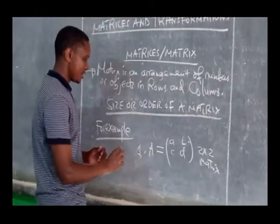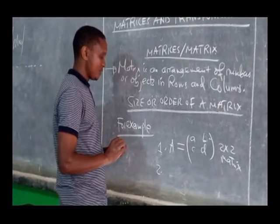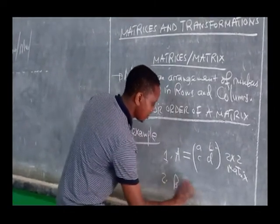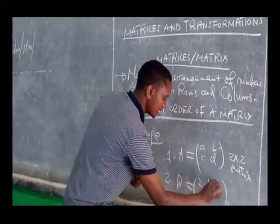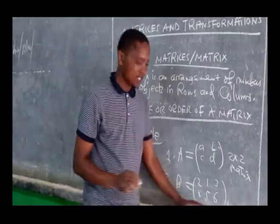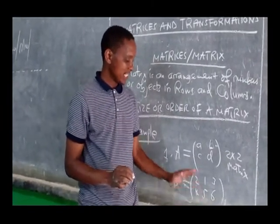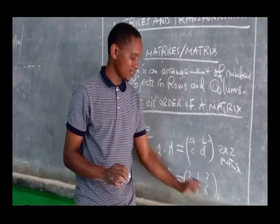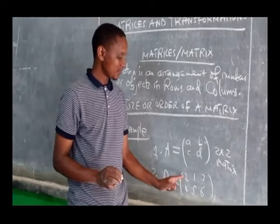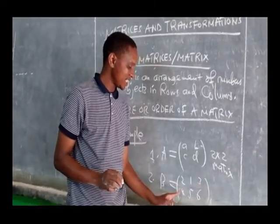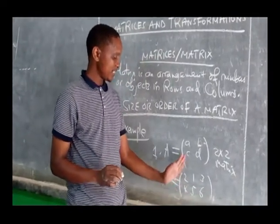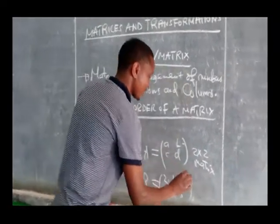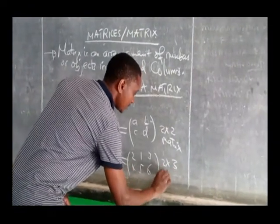For another example of matrix size, if we have matrix B with elements 2, 1, 3, 4, 5, 6 — we look at the number of rows and the number of columns. We have the first row and the second row. We have the first column, the second column, and the third column. So the size of this matrix is 2 by 3. This is a 2 by 3 matrix.